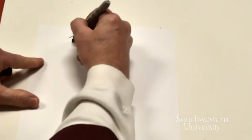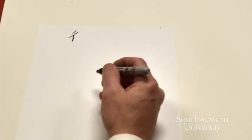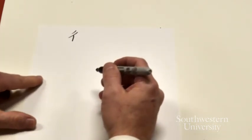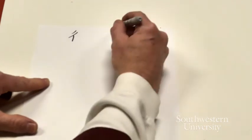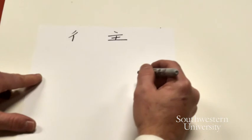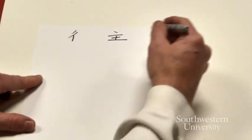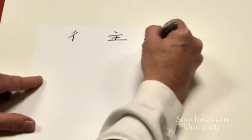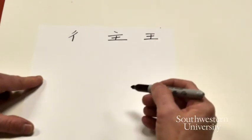Wong is composed of this component, which is a foot radical, indicating the meaning of going. And then you have this component, which is a host or a master. It's supposed to be the phonetic. Wong would be closer to that phonetic, of course.